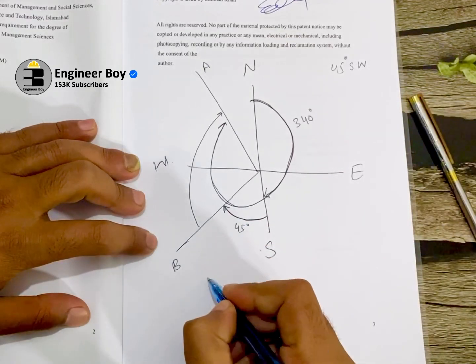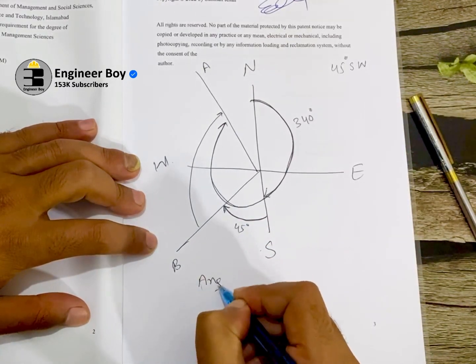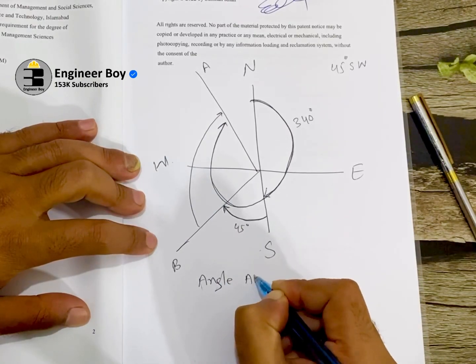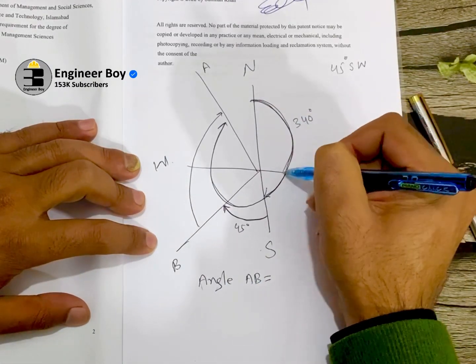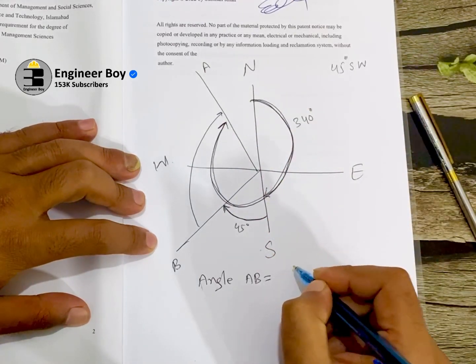So simple. So we can say angle AB equals this one, 340, which is actually the whole circle bearing of A, and that is actually 340 degrees,